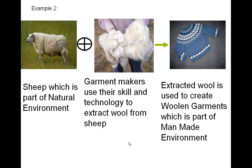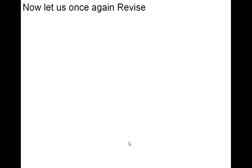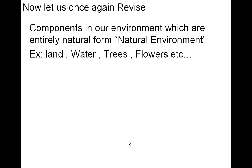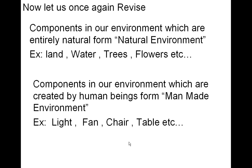Let us revise: components in our environment which are entirely natural form the natural environment — examples include land, water, trees, and flowers. Components which are created by human beings form the man-made environment — examples include lights, fans, chairs, tables, buildings, and books.